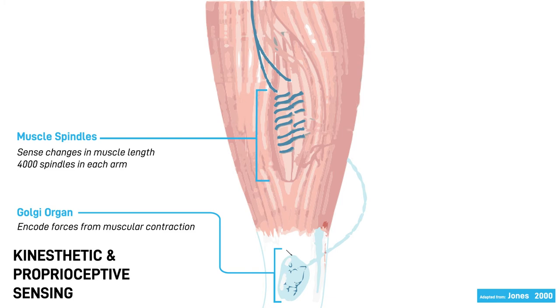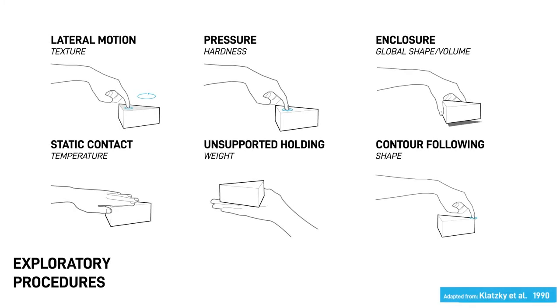These receptors are more specific than cutaneous receptors and mainly contribute to proprioception when there is no haptic contact. Another interesting aspect of our sense of touch is that the information gathered directly depends on the gestures you use to interact with the environment. In 1990, Klatsky and colleagues coined the term exploratory procedures to describe hand gestures that people unconsciously use to learn about object properties.